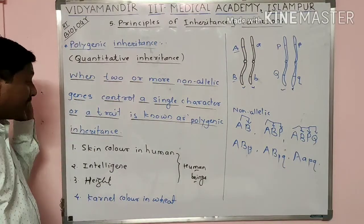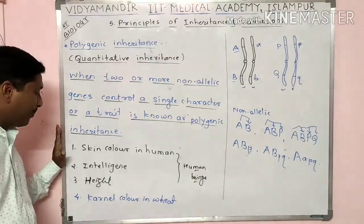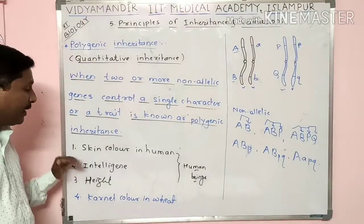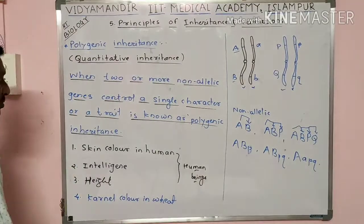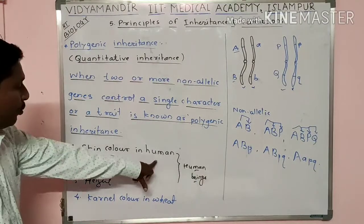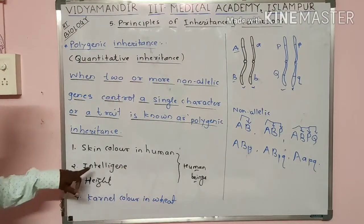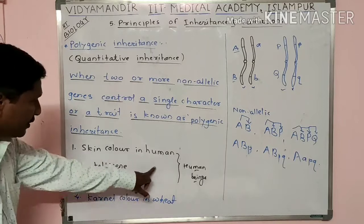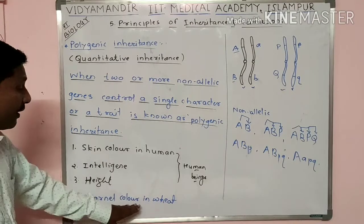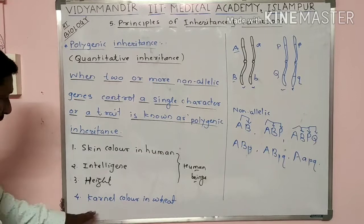We have four examples of polygenic inheritance: skin color in humans, intelligence in humans, height of humans, and wheat kernel color.